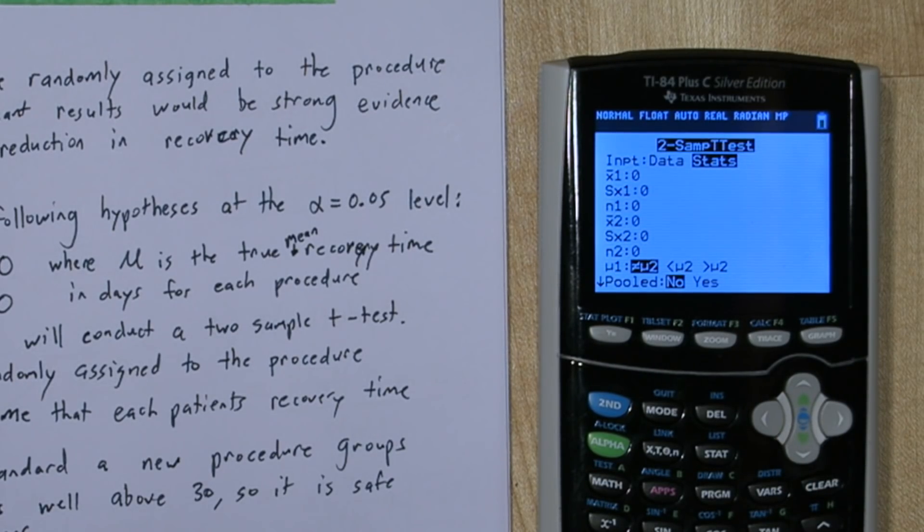The mean for the standard group was 217. The standard deviation was 34, and the sample size was 110. Now the mean for the new group was 186. The standard deviation was 29, and the sample size was 100.